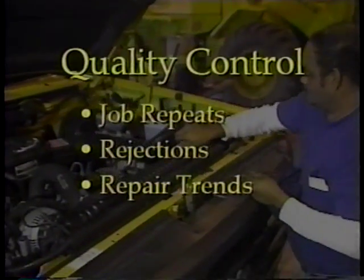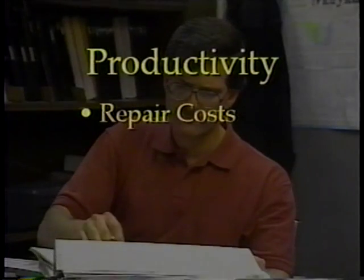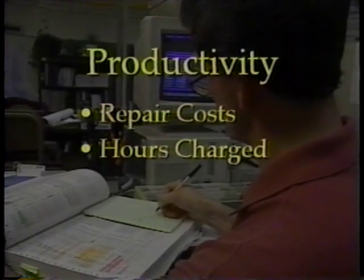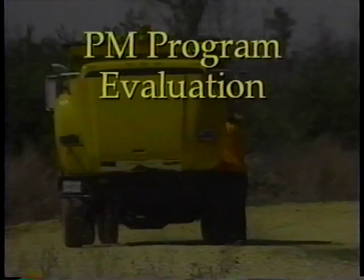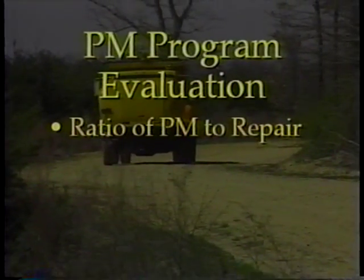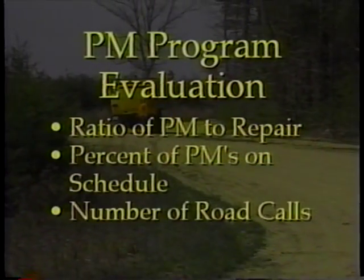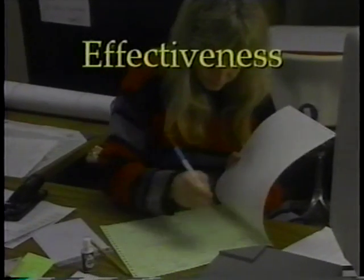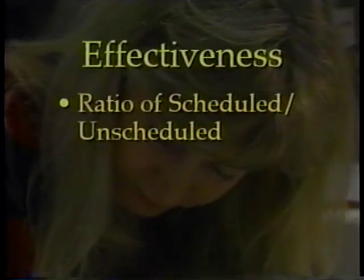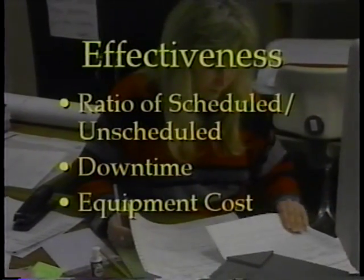Under the area of productivity, look at repair costs and percentage of hours charged to specific types of repairs. To evaluate the PM program, look at the ratio of PM hours to repair hours, the percent of PMs done on schedule, and the number of road calls. For overall effectiveness, look at the ratio of scheduled to unscheduled repairs, equipment downtime trends, and equipment cost per mile or per hour.